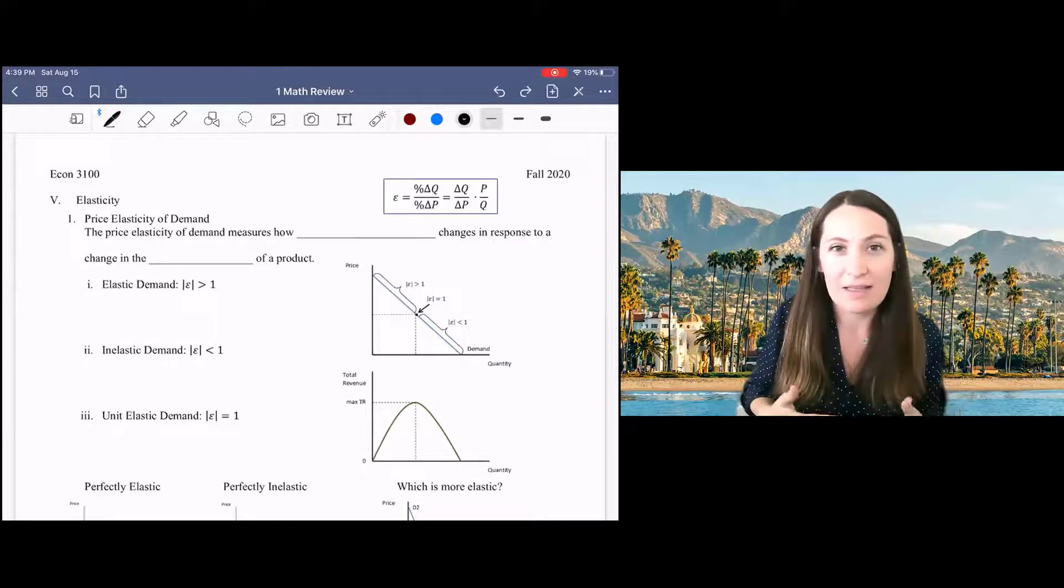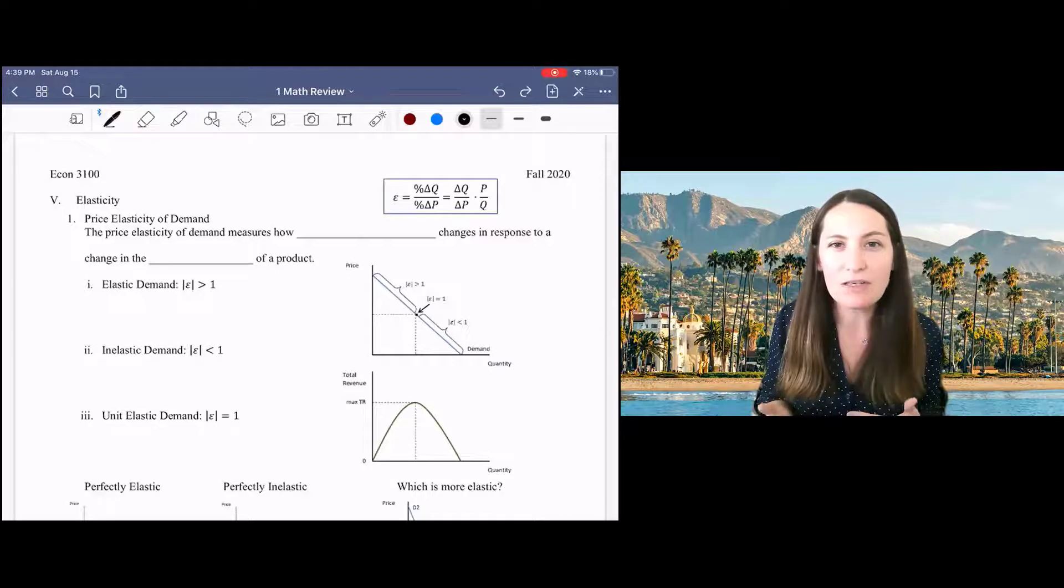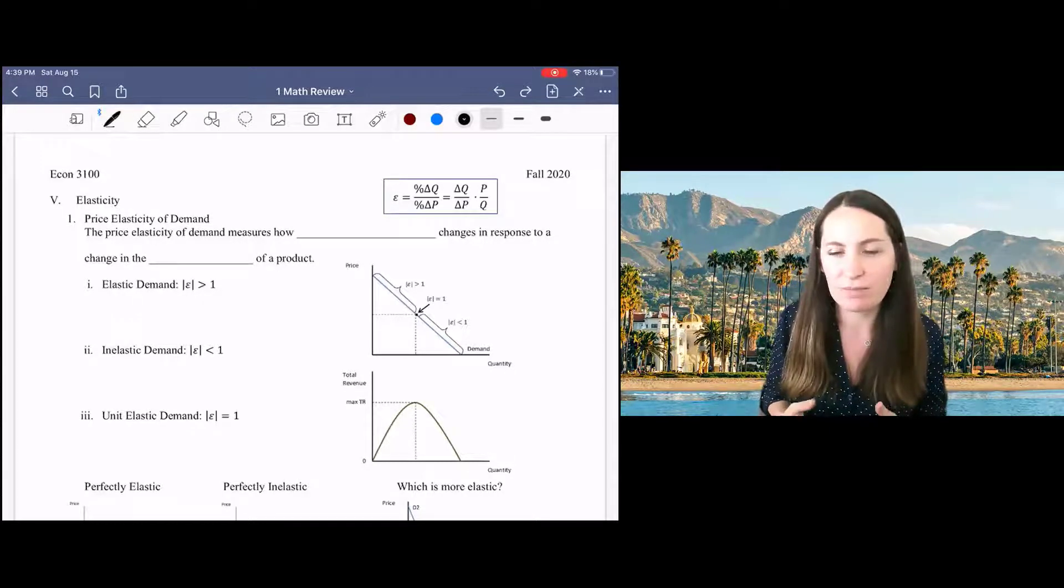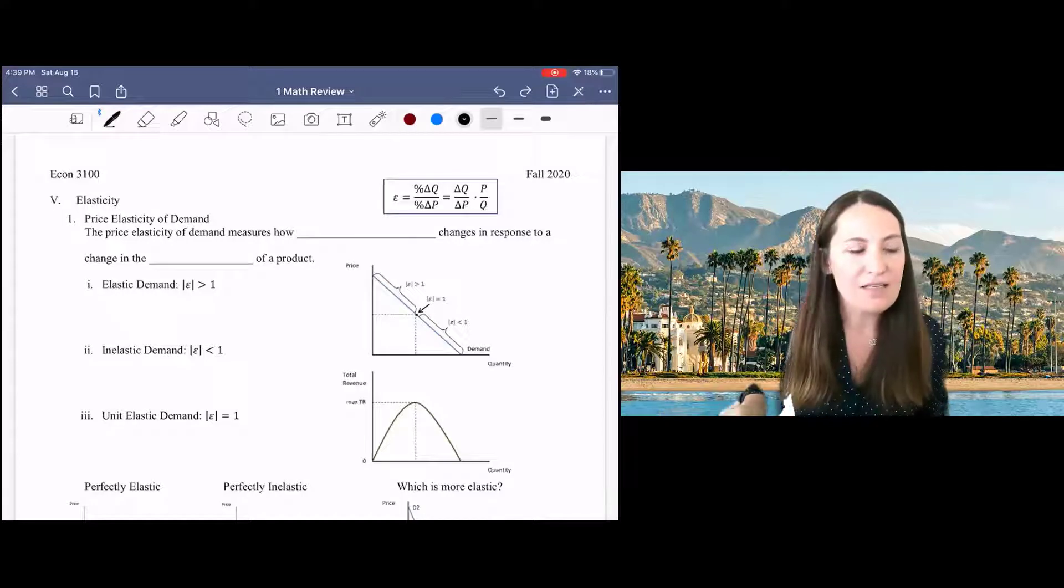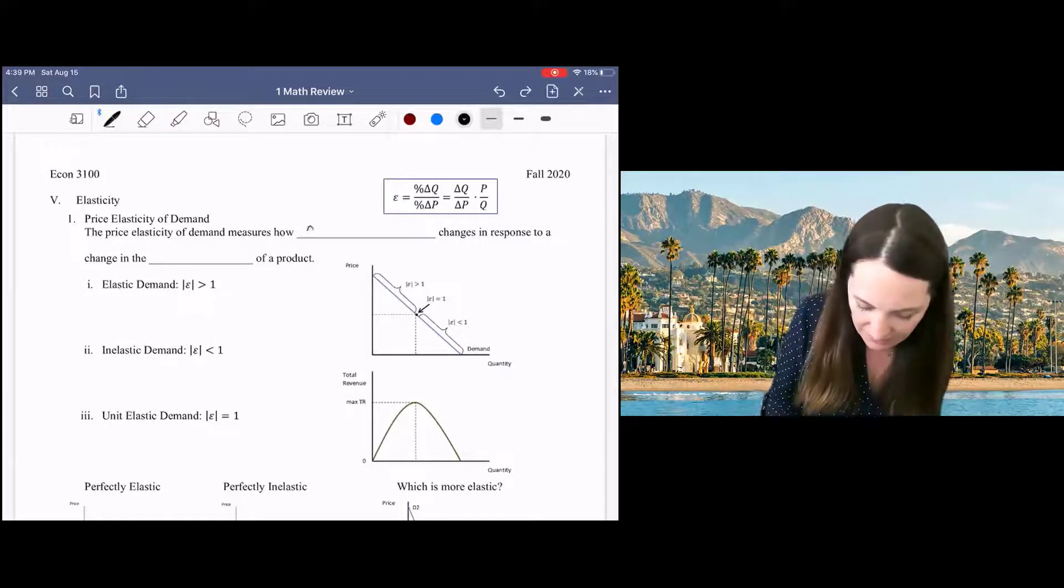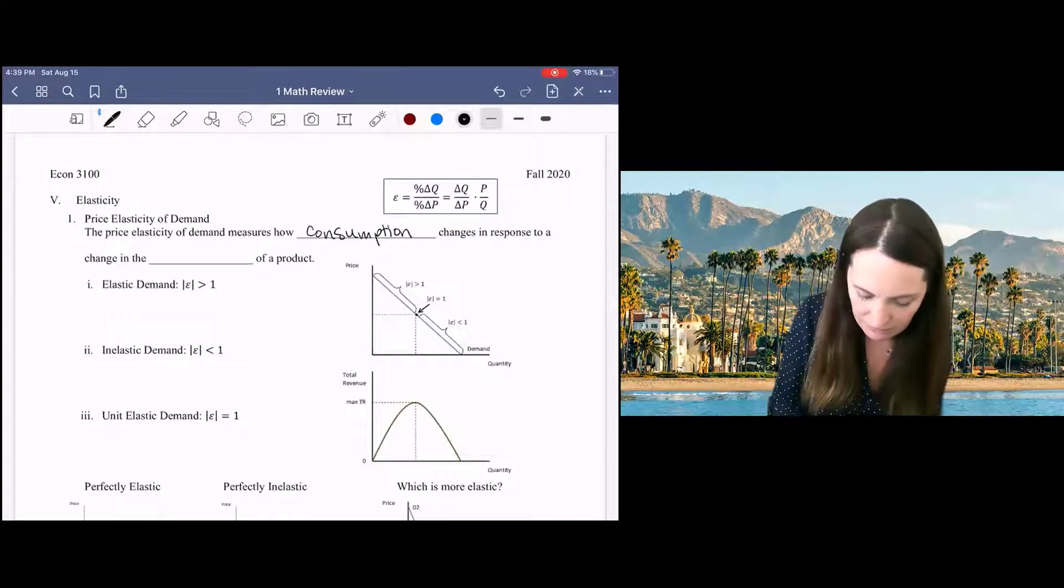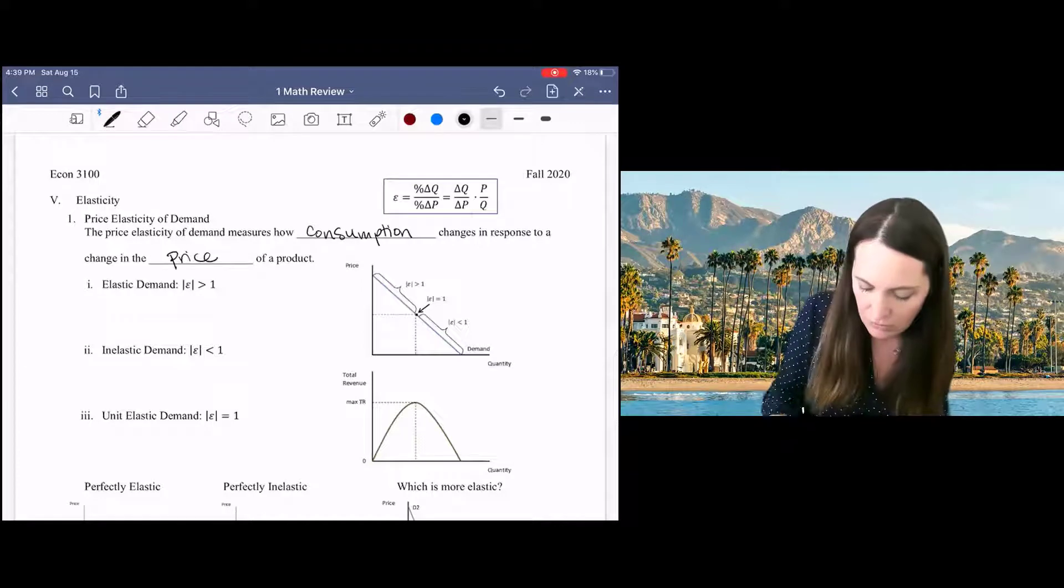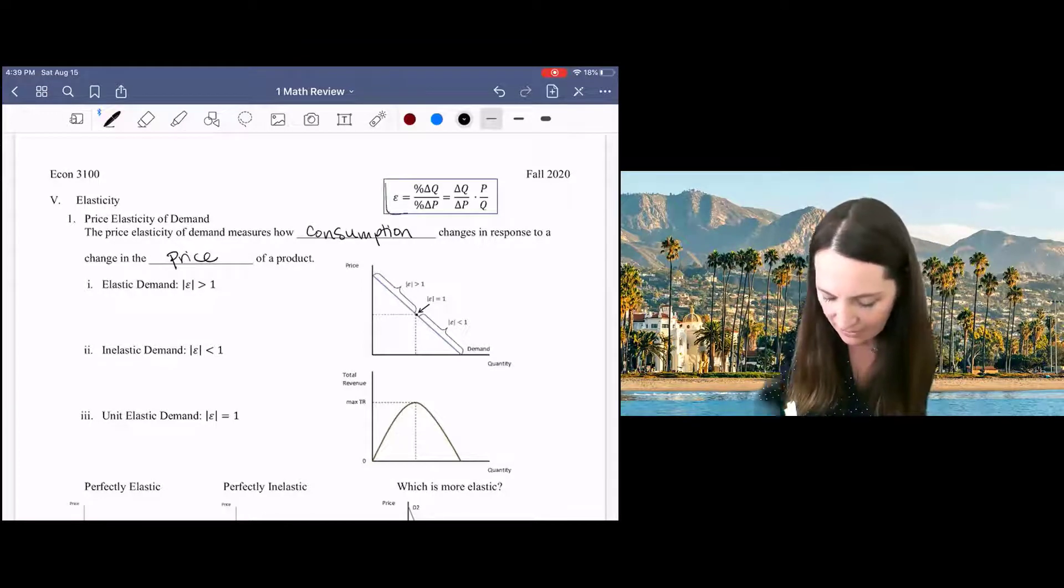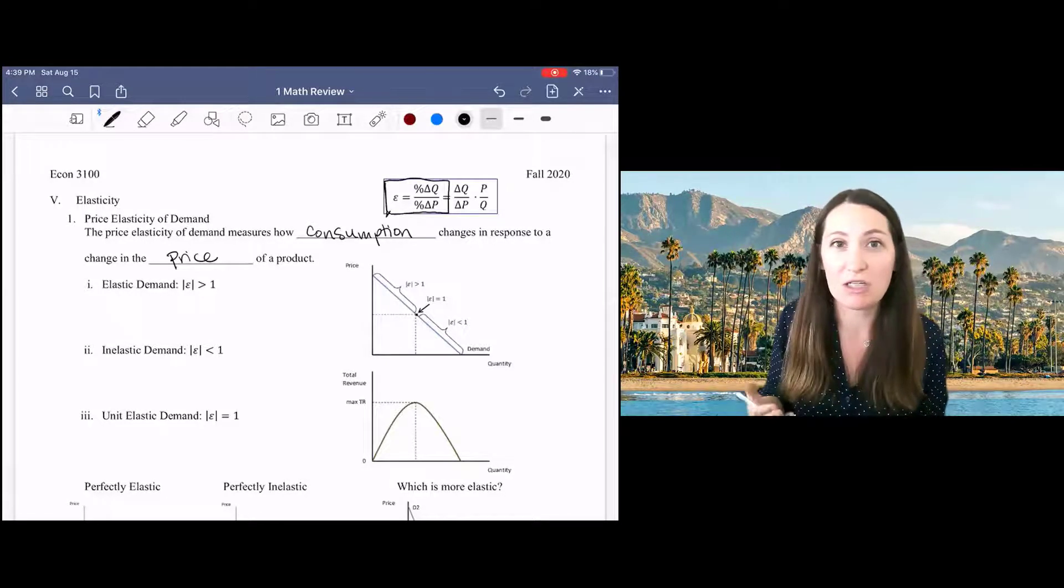We're going to start here with the price elasticity of demand, but it's good to keep that in mind that we're really trying to understand how responsive our consumers and producers are. Price elasticity of demand in particular measures how responsive consumption is to changes in price. And we do that by taking the ratio of the change in quantity demanded to the change in the price.